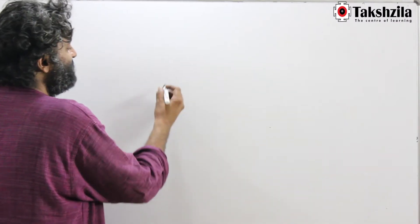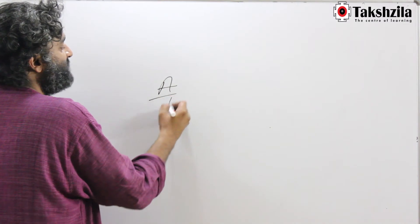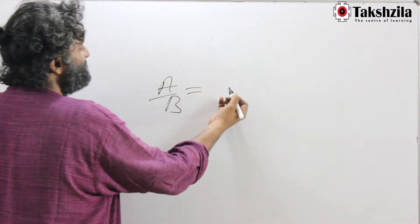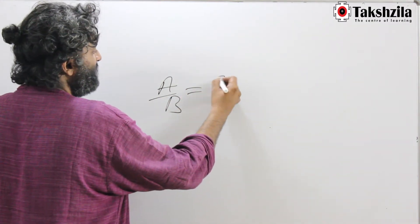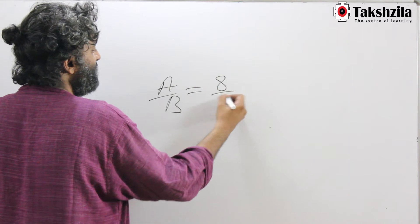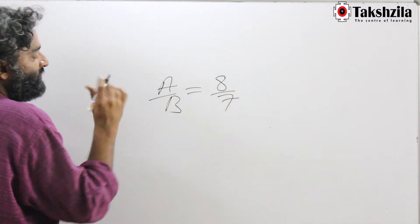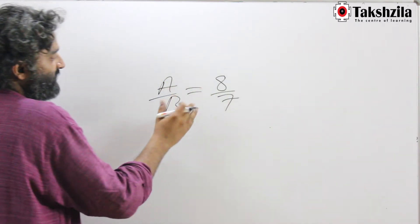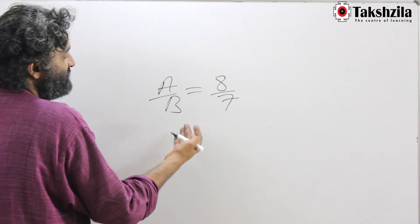Let's think backwards. If I have just been given a ratio A by B equal to 8 by 7, this information is enough to give me all possible percentage information.